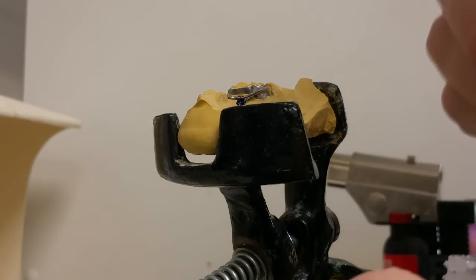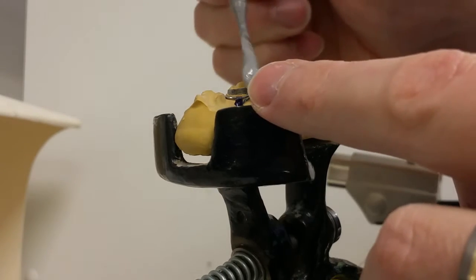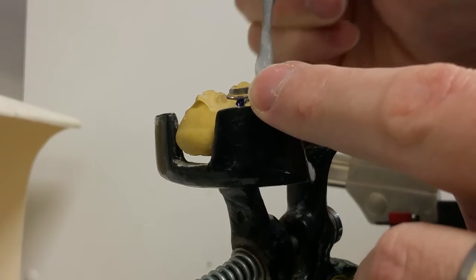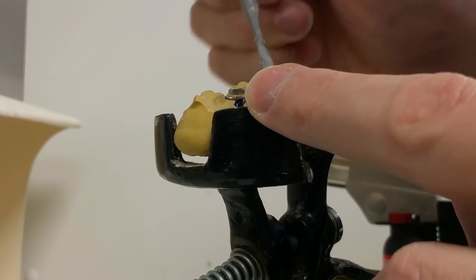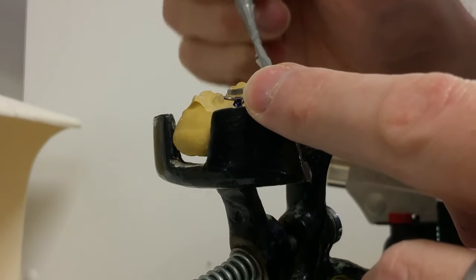You just keep doing the same thing. This is the next one. Just do the same thing: apply flux, apply heat shield, apply heat, and then solder.